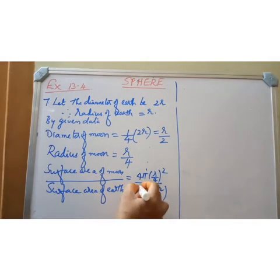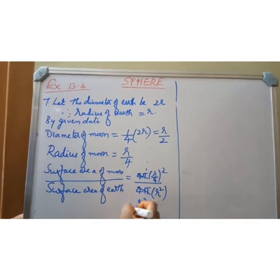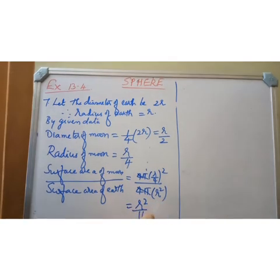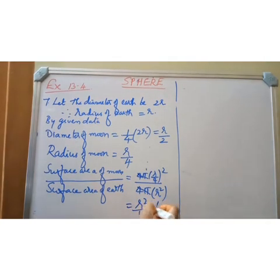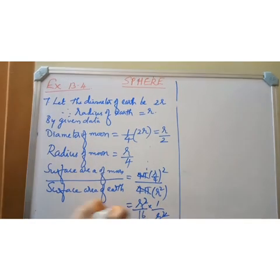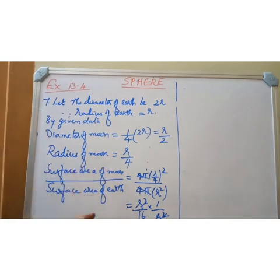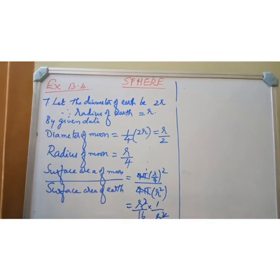So we get 4π(R/4)² divided by 4πR². The 4π and 4π cancel. We get R²/16 divided by R², and R² and R² cancel. You will get the ratio as 1 is to 16. If you consider the surface area of the earth on the numerator, the ratio is 16 is to 1. Nothing is difficult — only substitute the formula and you will get the answer.